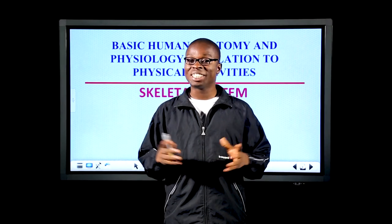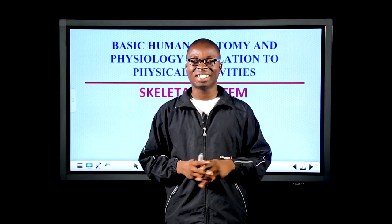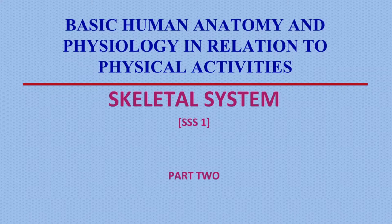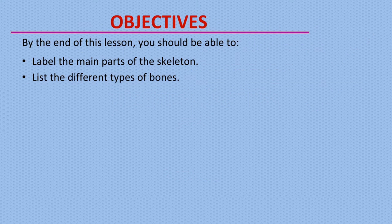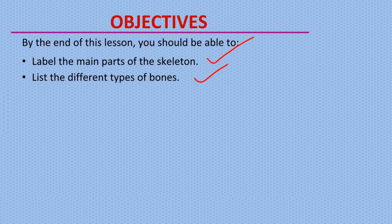Do you know that there are about 206 bones in the human body? We'll talk about these bones. I am Offrom Chukudi and I welcome you to this interesting physical and health education class. For today, we'll be discussing the theme: basic human anatomy and physiology in relation to physical activities, and our topic of interest is the skeletal system. By the end of this lesson, you should be able to label the main parts of the human skeleton and list the different types of bones.